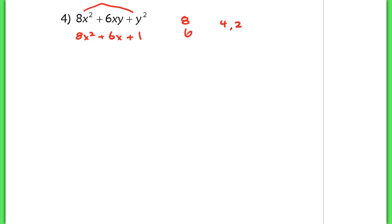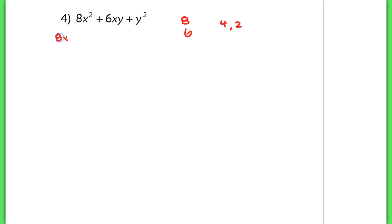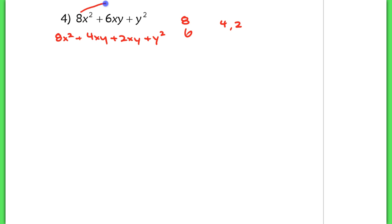So I'm going to split the middle term here and add back the y term, so that I end up with 8x squared plus 4xy plus 2xy plus y squared. I'm just splitting the middle term — the same thing that I normally would do. I'd multiply 8 times 1, and then use the 6 here to find my numbers.